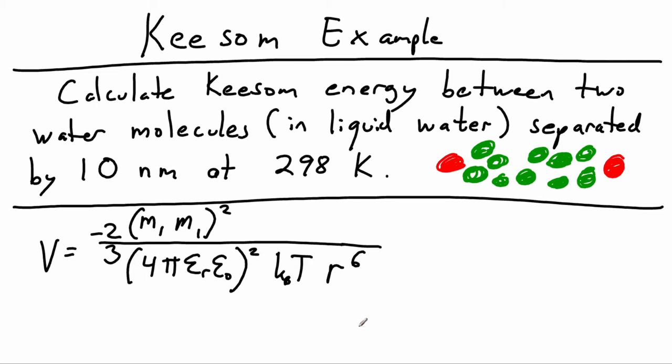We need to make sure we have all these things. The distance was 10 nanometers, the temperature was 298 K. We need to look up the dipole moment of water, and we see that it's 1.85 debye. We're going to convert that to SI units so we can cancel everything. That's all we need, so let's go ahead and do the conversion and plug in the numbers.